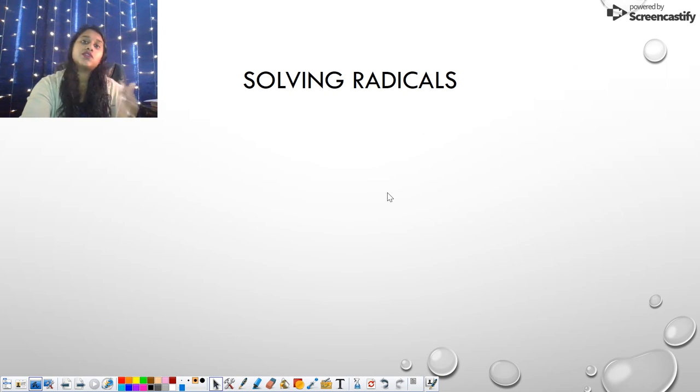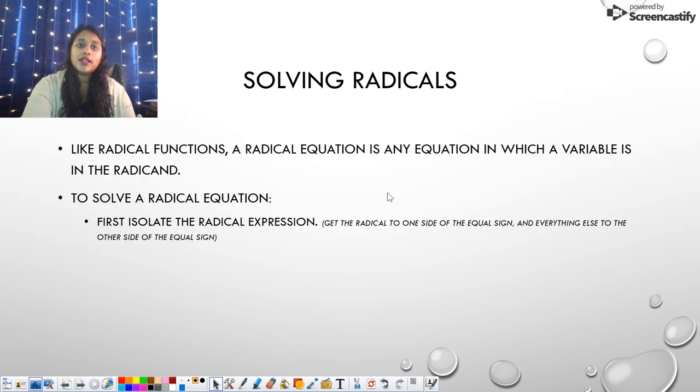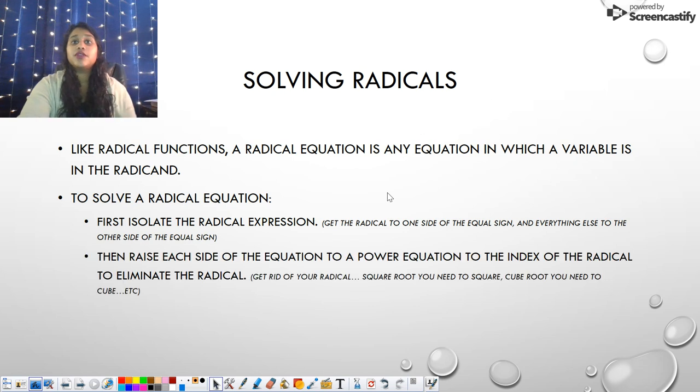Okay, but how do I actually solve a radical? In order to solve a radical, we're going to follow some simple steps. You're going to isolate the radical. So anything that's not a radical, you throw it to one side of the equals, leave the radical on the other side of the equal sign. Then you're going to get rid of the radical. Well, how do you do that? You do the opposite of what a radical is. So if it's a square root, you square it. And if you square one side, you have to square the other side.